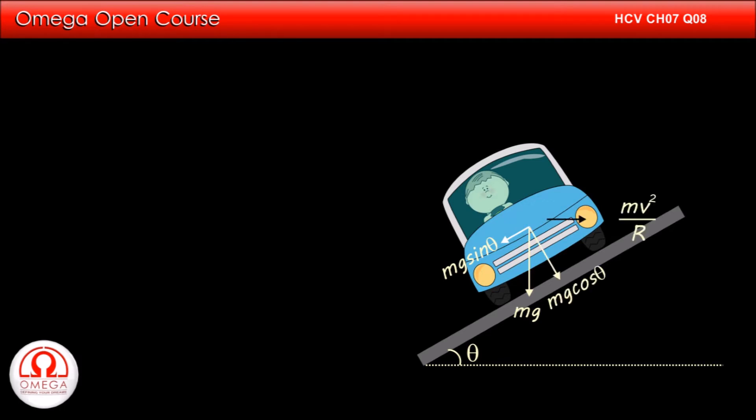A centrifugal force of magnitude Mv squared by R acts in radially outward direction. Since the centrifugal force makes an angle theta with the slope, component of centrifugal force along the slope is Mv squared by R cos theta and perpendicular to the slope is Mv squared by R sin theta.